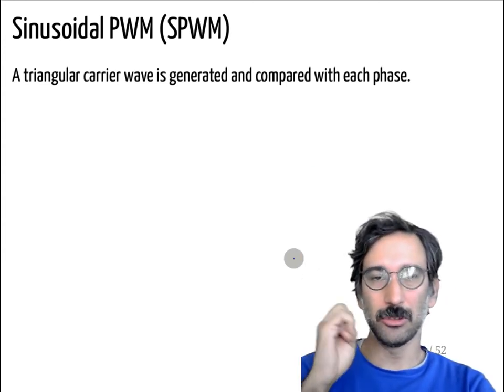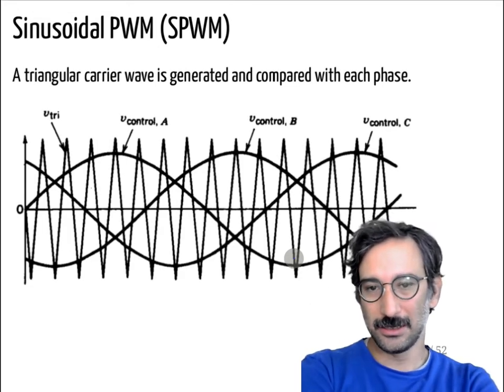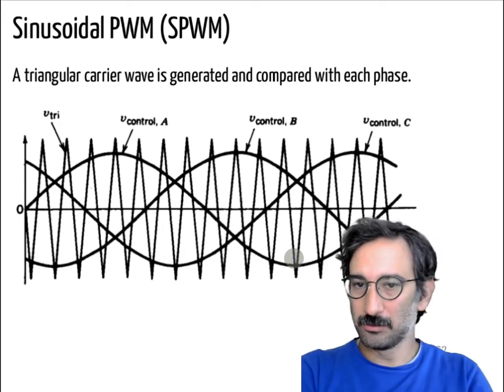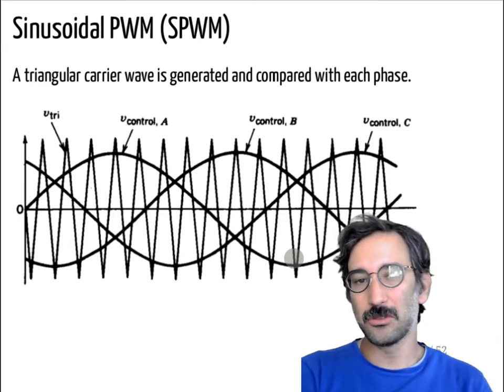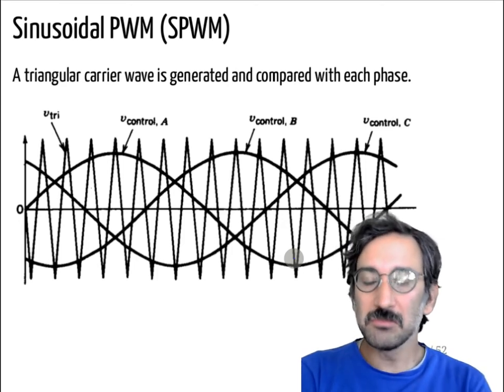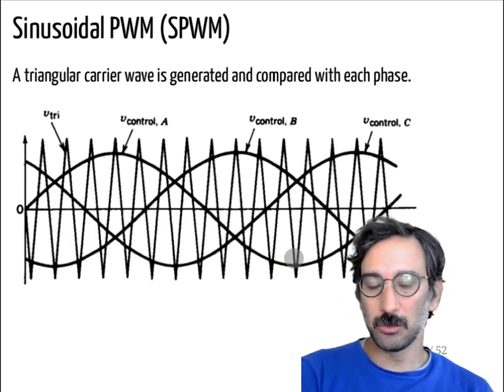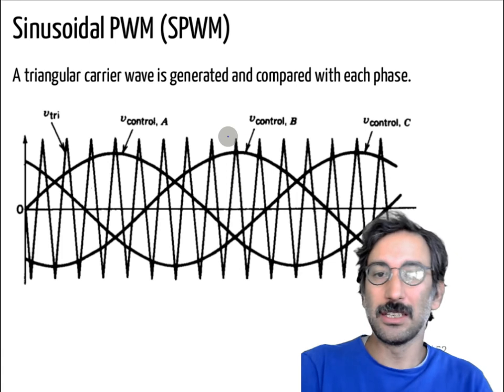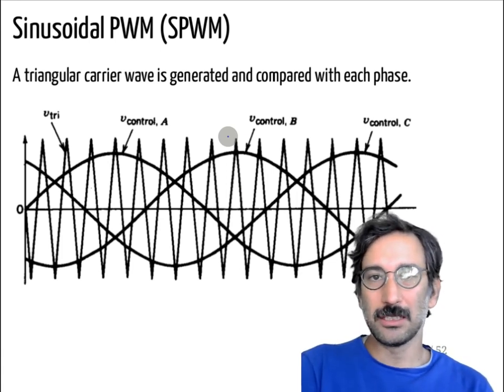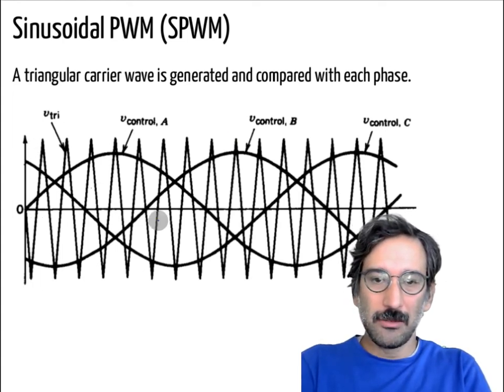...for the single phase, depending on that comparison result you either turn on the upper or lower switch. Again for unipolar and bipolar there were slight differences but I'm not getting into that detail in this video. So here this is completely the same. So what we have is we have three reference sinusoids for different waveforms. Again, normally you want to generate a balanced three-phase output. So you have your triangular waveform and then you compare it with your reference.